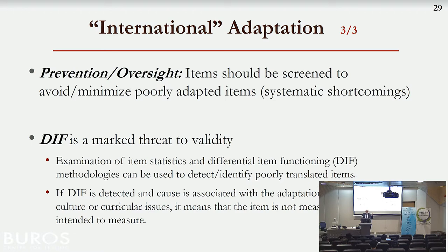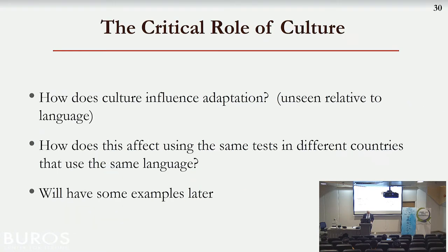We have techniques in testing called differential item functioning, or DIF — it used to be called item bias. This looks at how items are similar empirically across two versions. In the U.S., it's used to compare how men and women do on an item. There was a movement in the 1990s to apply DIF to all translated items. However, the problem — as pointed out by one of my former students — is that you have two issues confounded: is it a poor translation, or are there true ability differences across cultures? With that confounding, you can't separate them.